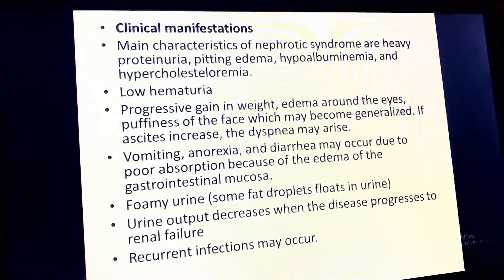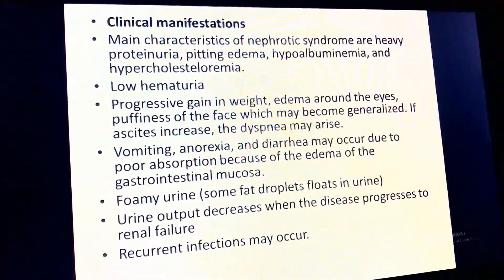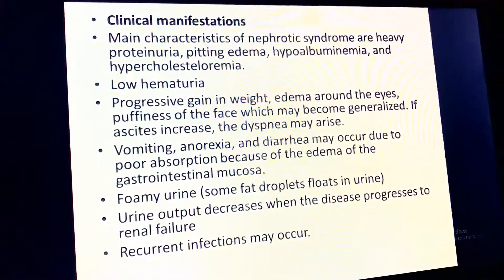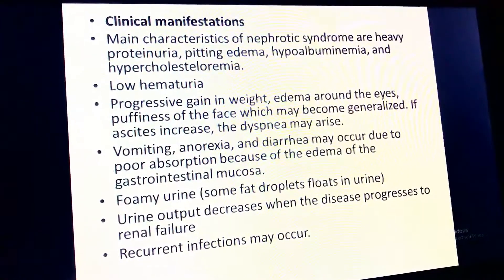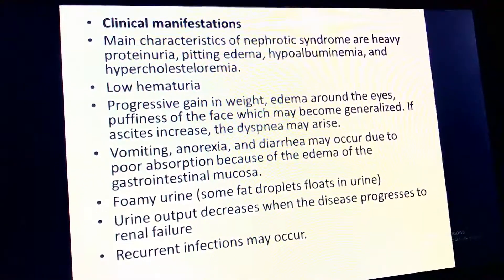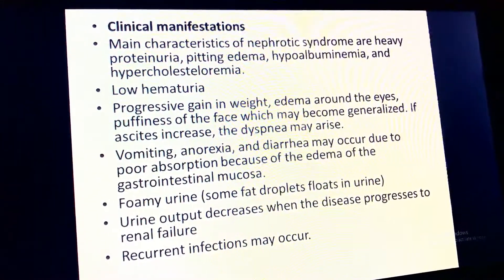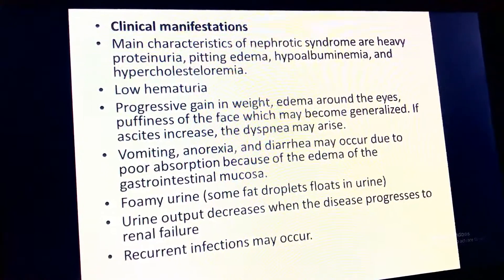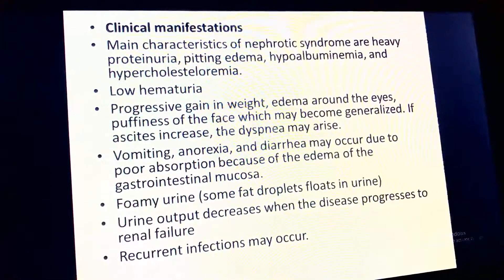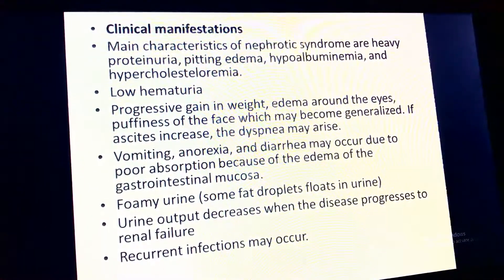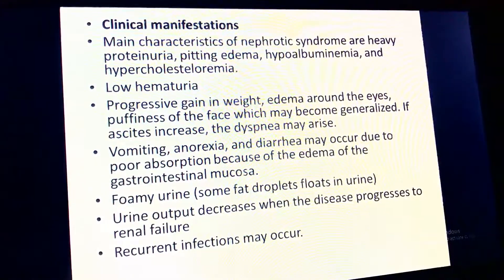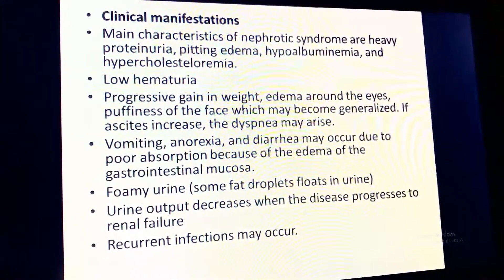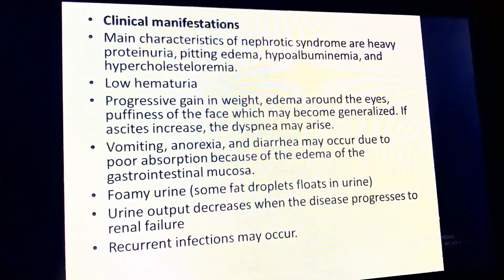Clinical manifestations of nephrotic syndrome include heavy proteinuria, pitting edema, hypoalbuminemia, hyperlipidemia, and hematuria with progressive weight gain. Edema appears around the eyes and face and may become generalized. If ascites increases, dyspnea may arise. Vomiting, anorexia, and diarrhea may occur due to poor absorption from edema of the gastrointestinal mucosa. Urine output decreases as the disease progresses to renal failure, and recurrent infections may occur.